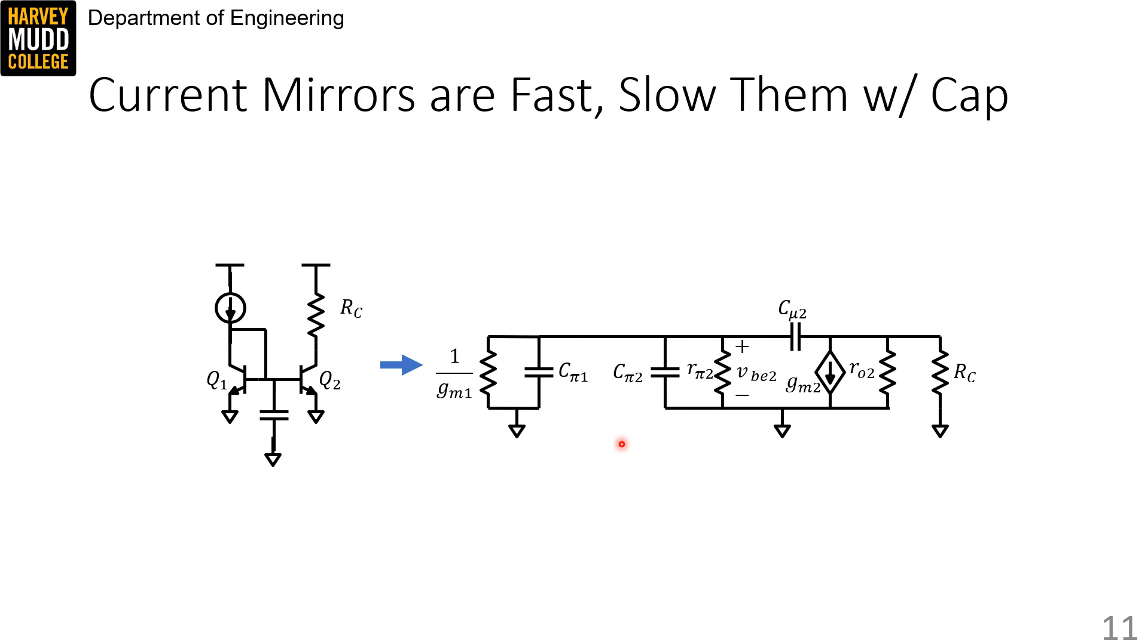So it's common to add a big decoupling capacitor to the middle node of mirrors to slow them down deliberately.